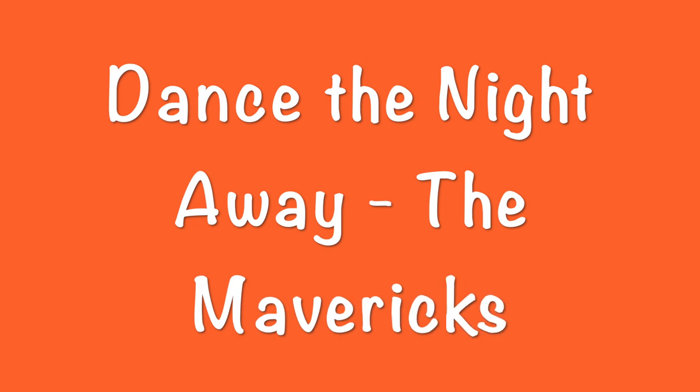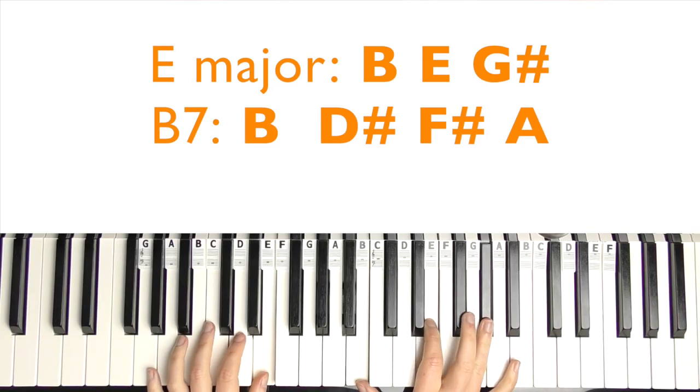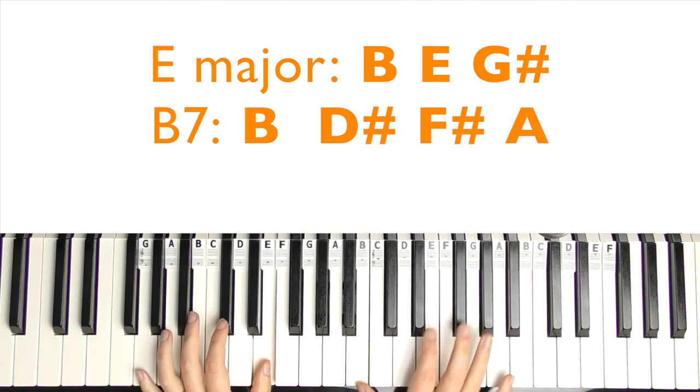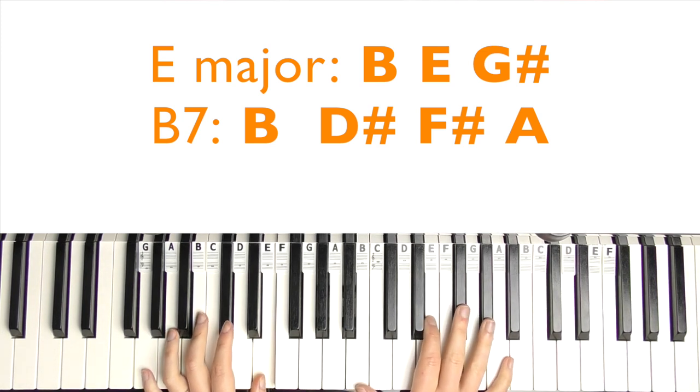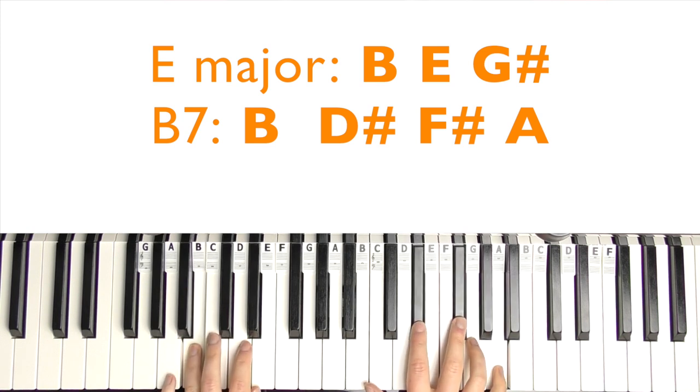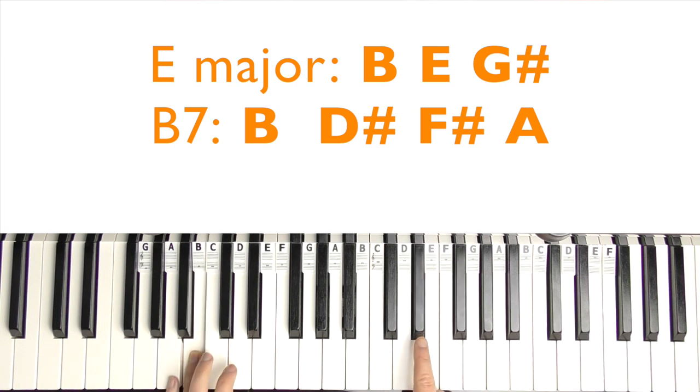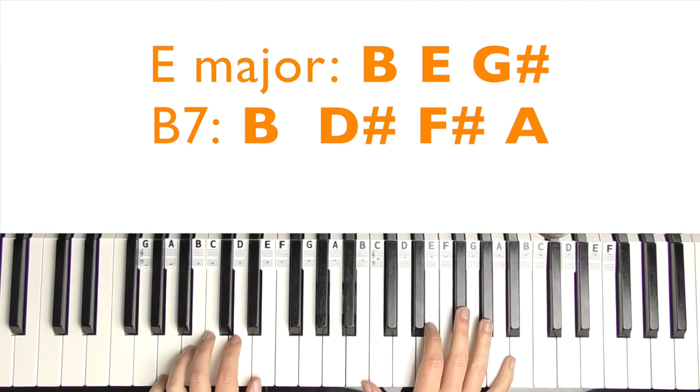So the next song is Dance the Night Away by the Mavericks. So the first one is E major. We've played it this way before. So B, E, and D sharp. E major is featuring quite a lot so far. And the next chord is a B7. So you could just play the left hand a B, the right hand D sharp, F sharp, and A. So we have, it's quite a quick transition as well.